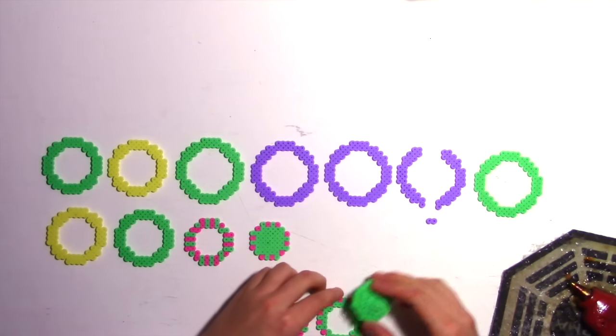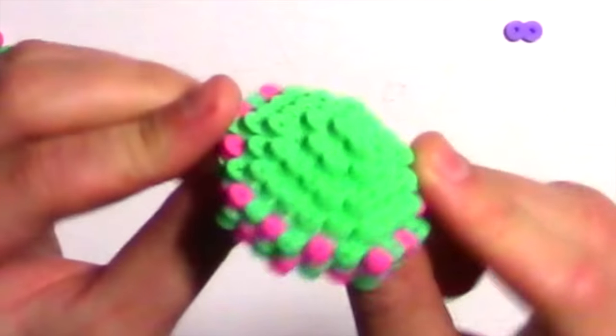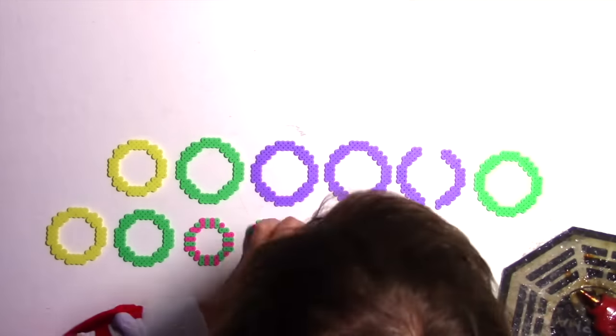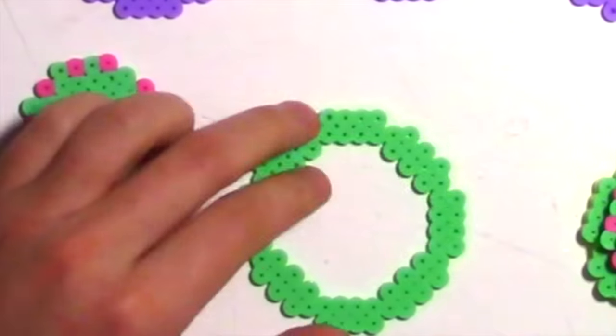Then the two small rings are next. Then the two medium rings. And three large rings.